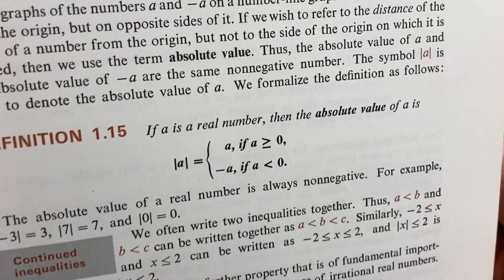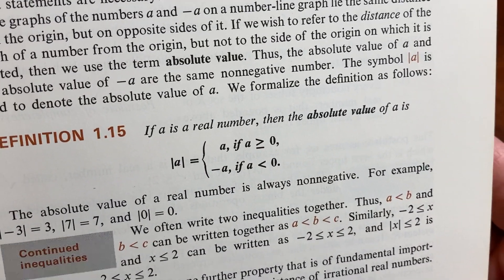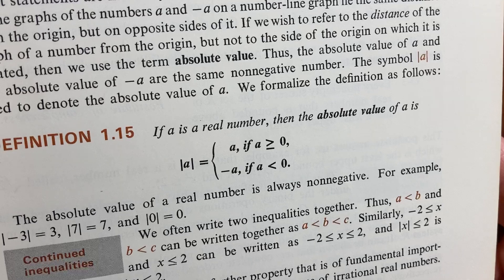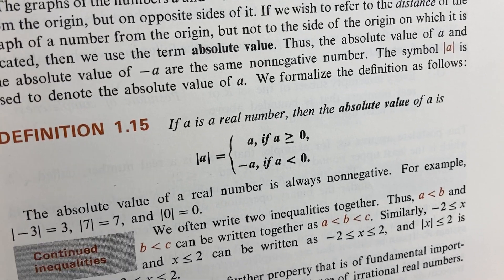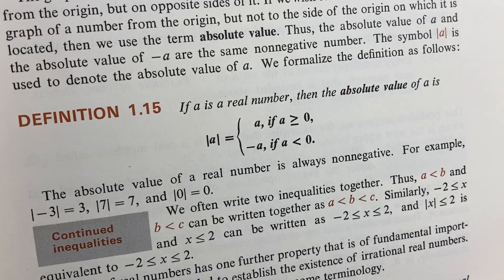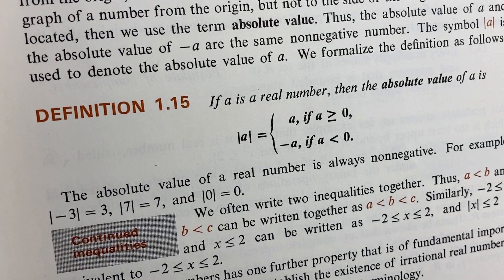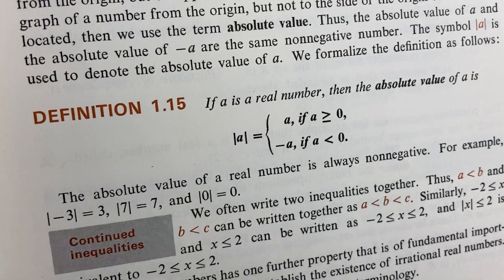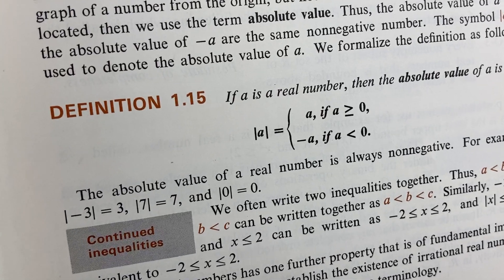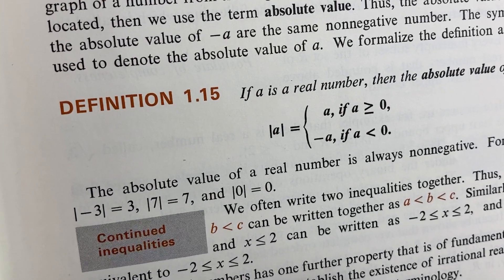This is a really important definition here. If a is a real number, then the absolute value of a is, well, it's going to be a if a is greater than or equal to zero and negative a if a is less than zero. So, it's always non-negative. Can't be negative. For example, the absolute value of negative three is three. The absolute value of seven is seven. The absolute value of zero is zero.